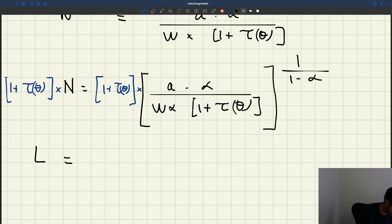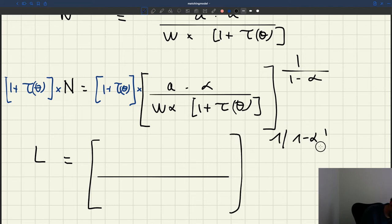So here I have (1 + τ(θ)). I need to bring it inside the big square brackets. And you can always do that. So what I can do is get this. The exponent here is not going to change, 1 over 1 minus α.